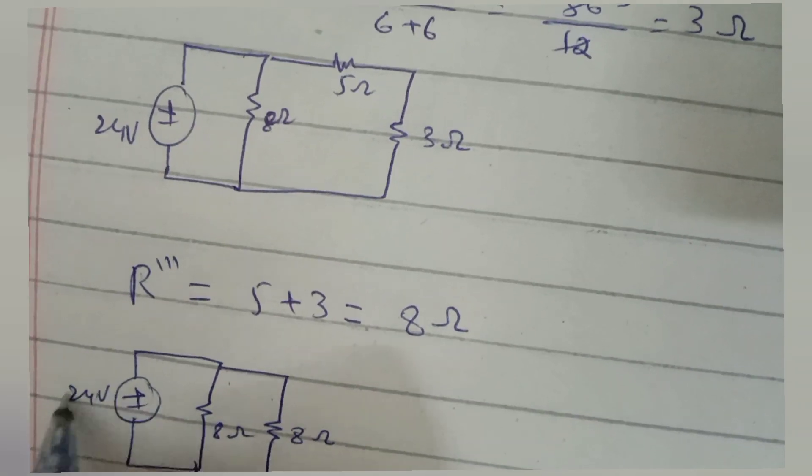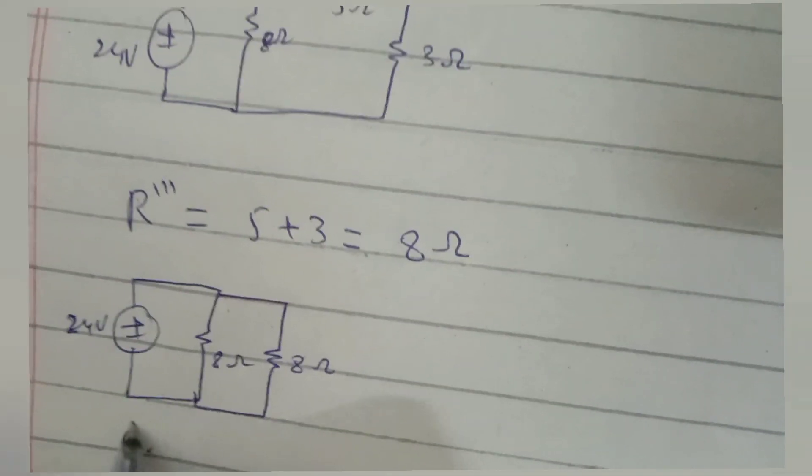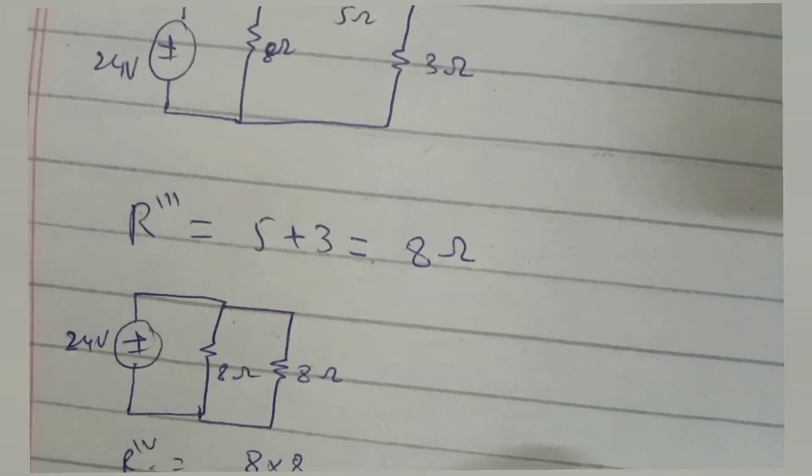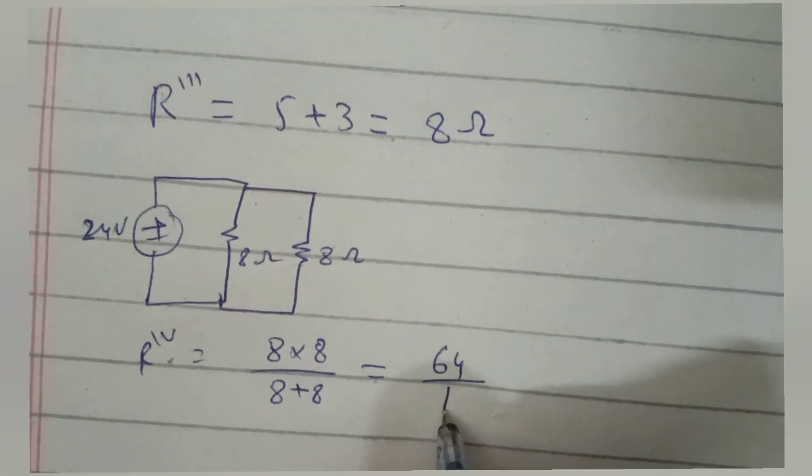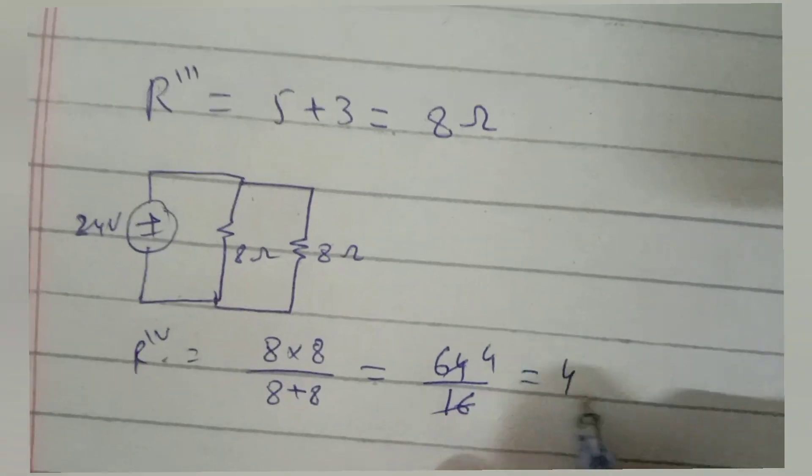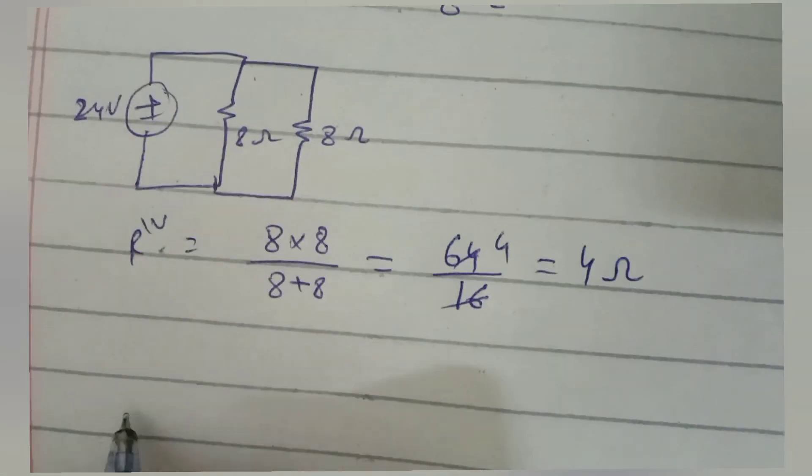Next, two 8 ohm resistors are connected in parallel and their equivalent resistance will be 8 × 8 / (8 + 8) equals 64/16 which equals 4 ohms. Here our equivalent is 4 ohm, voltage is 24 volts.